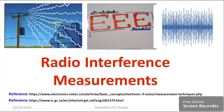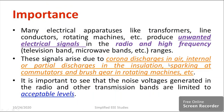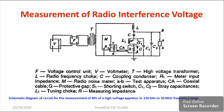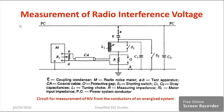Let us conclude the session. First I explained the importance of radio interference measurement. Thereafter I explained why this measurement is conducted and what are the reasons. I explained how to measure the radio interference level by using the radio interference meter, which measures in the range of 150 kilohertz to 30 megahertz. The radio interference meter is the supplementary or auxiliary equipment used to measure the radio interference directly.